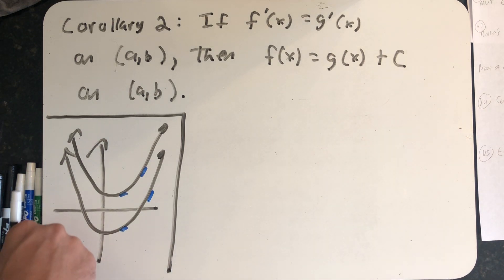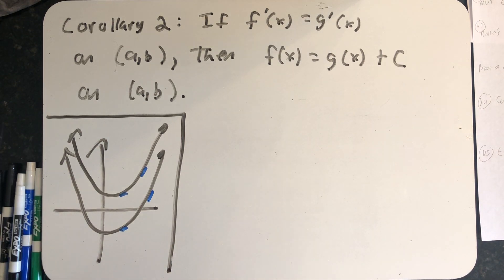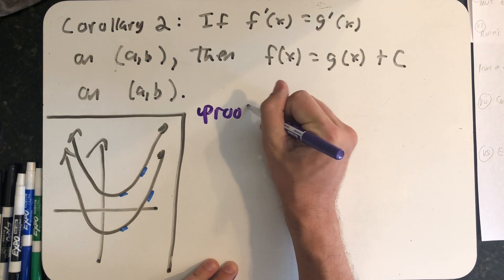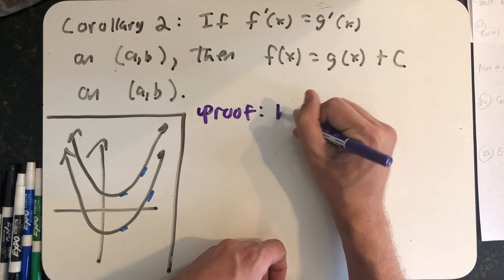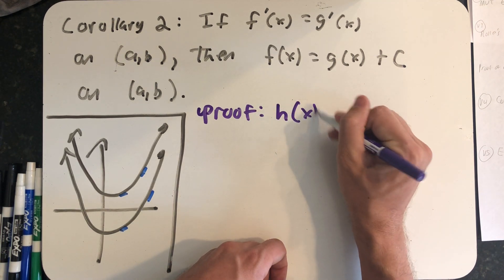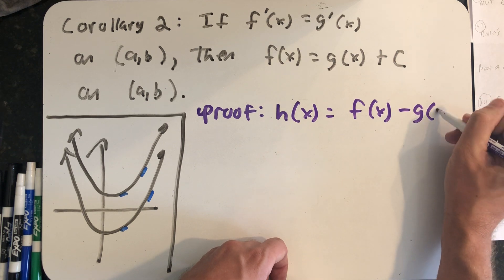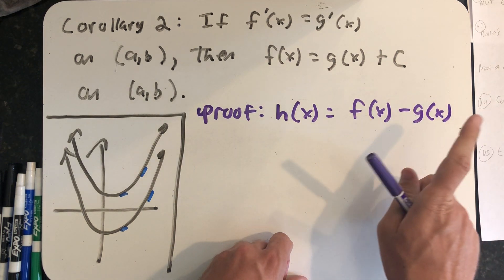So let's go through and prove this second corollary. What I want to do is construct a new function. h(x) is going to be the function that is the difference of f and g.